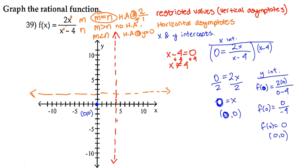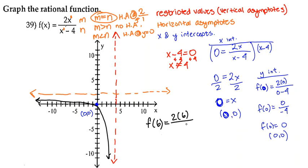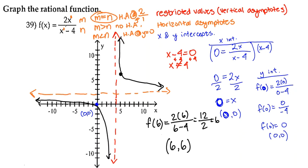On the left side of the vertical asymptote, you can see the graph behaves a certain way. But we don't know what's happening on the right-hand side, so let's plug in a test point. Let's use x equals 6. For f(6), we get 2 times 6 over 6 minus 4, which is 12 over 2, which is 6. So when x is 6, y is also 6. That point lands to the right of the asymptote, and the graph curves up from there. And that is our graph.